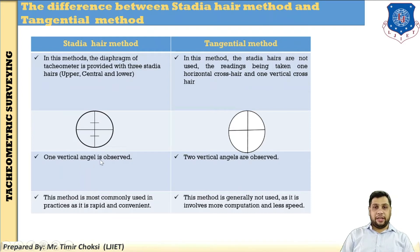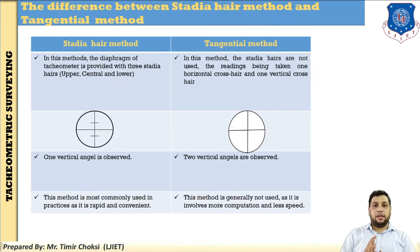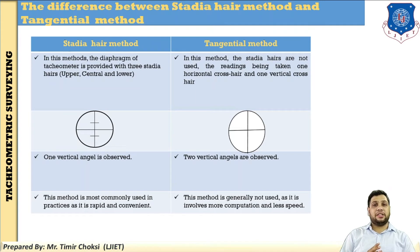In the stadia method, one vertical angle is observed. In the tangential method, two vertical angles are observed. The stadia method is most commonly used in practice because it is rapid and convenient — only one vertical angle needs to be measured. After finding theta and S, you directly find the horizontal distance and vertical distance. In the tangential method, two vertical angles are measured, so error can develop. The tangential method is generally not used, but where it is not possible to use the stadia hair method, the tangential method is used.